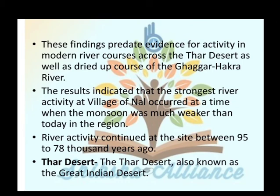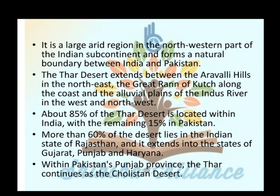The Thar Desert is also known as the Great Indian Desert. It is a large arid region in the north-western part of the Indian subcontinent and forms a natural boundary between India and Pakistan. About 85% of the Thar Desert is located within India, with the remaining 15% in Pakistan. More than 60% of the desert lies in the Indian state of Rajasthan, and it extends into Gujarat, Punjab, and Haryana. Within Pakistan's Punjab province, the Thar continues as the Cholistan Desert.